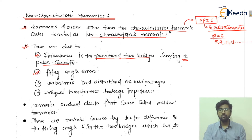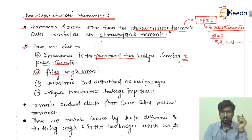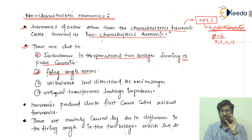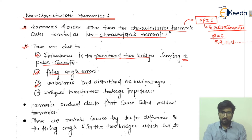The second cause is firing angle error. For example, one thyristor should operate at alpha = 30 degrees and the other at alpha + 30 degrees, since 30 degrees is the offset used in a 12-pulse converter. However, due to some disturbance or connection issues, if a firing angle error occurs, this can be a cause of non-characteristic harmonics.